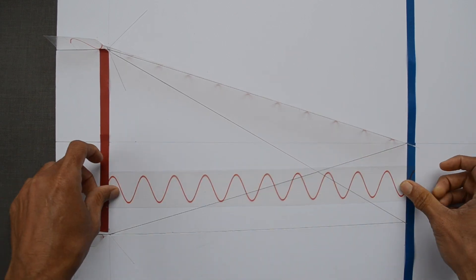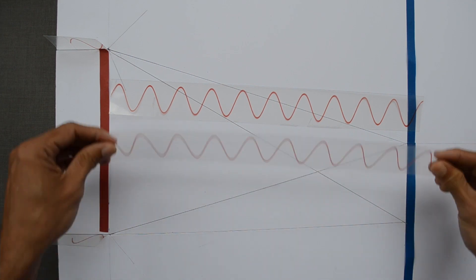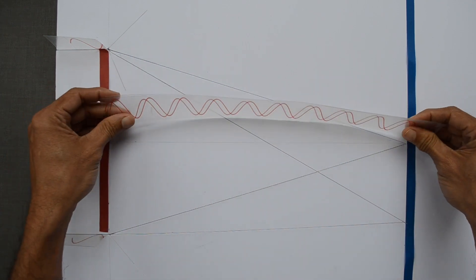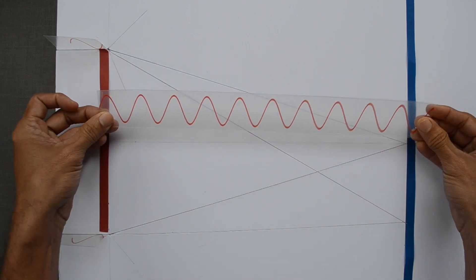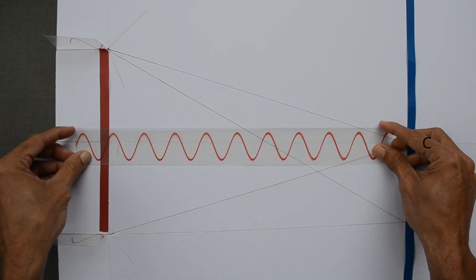Two waves travel the same distance from respective point sources to point C on the screen. Let us place one on the top of another and verify. Path difference as well as phase difference is zero.